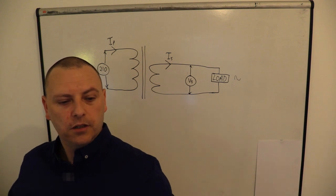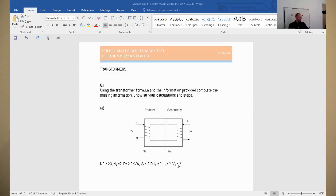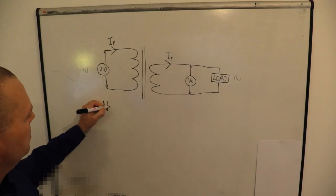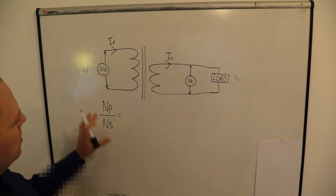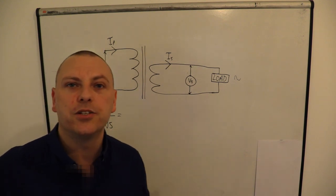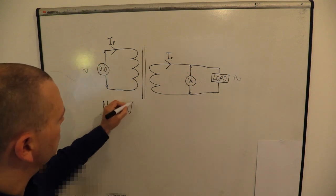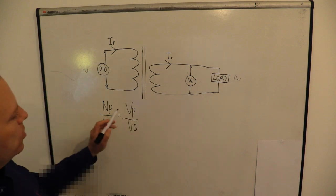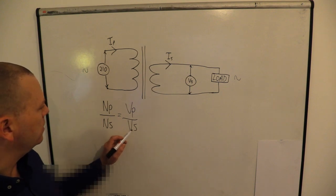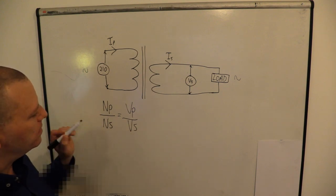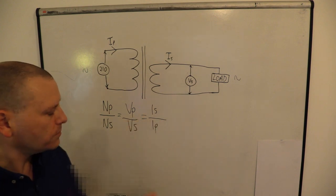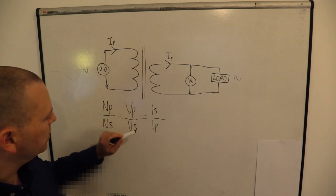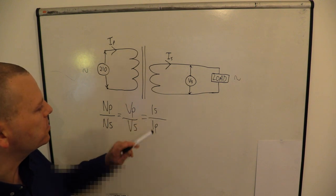We've got what we need to make a ratio - the primary turns and the secondary turns. So I'm going to start there and get that ratio. To get the ratio I'm going to use the transformer formula: primary voltage over secondary voltage equals primary turns over secondary turns, and that also equals secondary current divided by primary current. Note that we have primary over secondary, primary over secondary, and then for the current it's flipped - it's secondary over primary.